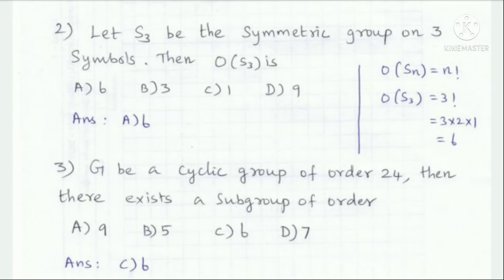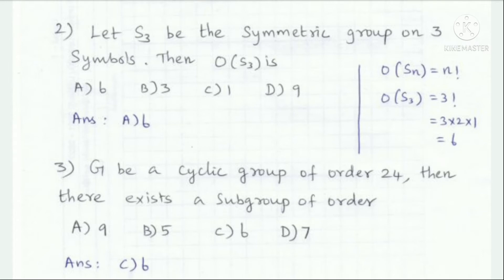Let G be a cyclic group of order 24. Then there exists a subgroup of order — this follows from Lagrange's theorem. G is a group and H is a subgroup; the order of H is a divisor of the order of G. So the subgroup order must divide 24. The answer is option C: 6.